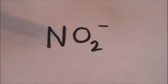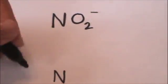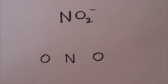NO2 minus is nitrite. Remember NO3 minus is nitrate but NO2 minus is the nitrite anion. Now let's draw the Lewis dot structure for this. We know that the nitrogen is going to be in the center because oxygens don't like bonding together unless they have to.